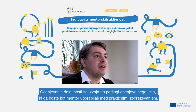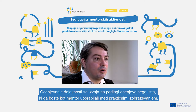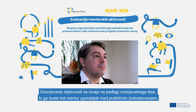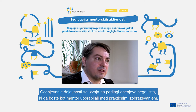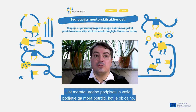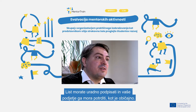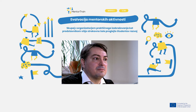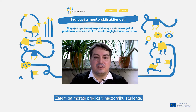The basis of the evaluation of the activities is formed by the evaluation sheet that you as a mentor will have used throughout your apprenticeship. You should make sure that the sheet is officially signed by you and signed off in the usual way by your company. Once this is done, you should share this evaluation sheet with the apprentice's supervisor.